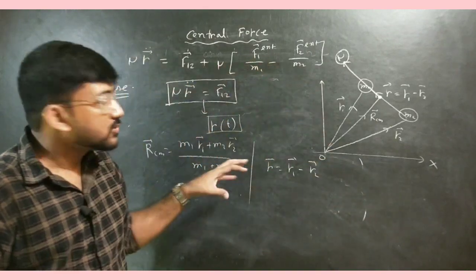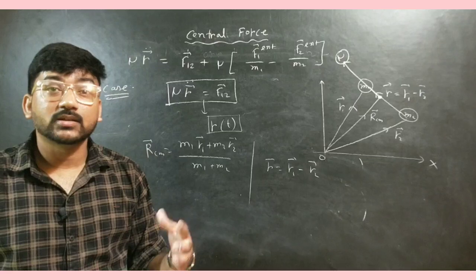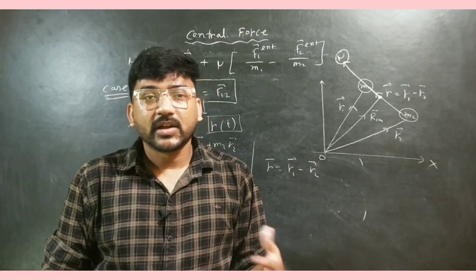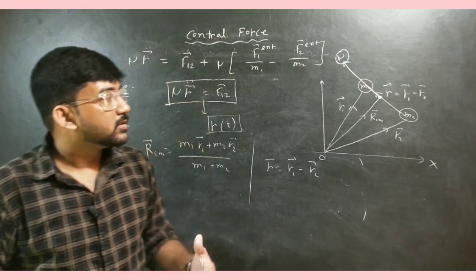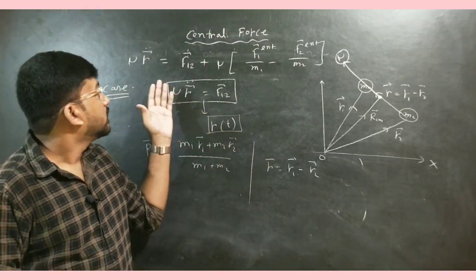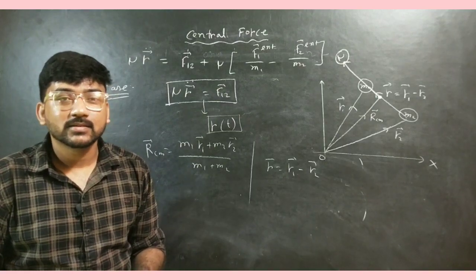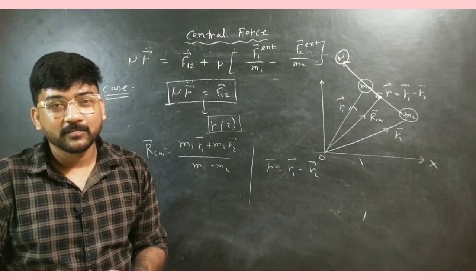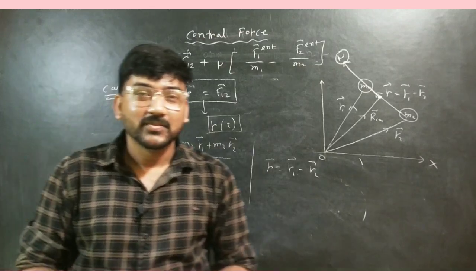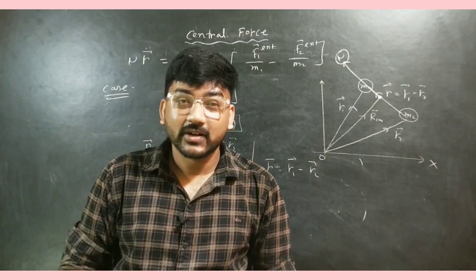There are many examples of this approach; in the next class we will discuss the binary star (double star) system, whose motion can be well explained using the concept of reduced mass and the equivalent one-body problem. Thank you for today, and if you are new to this channel, please subscribe and hit the bell icon to get notifications for the next class.